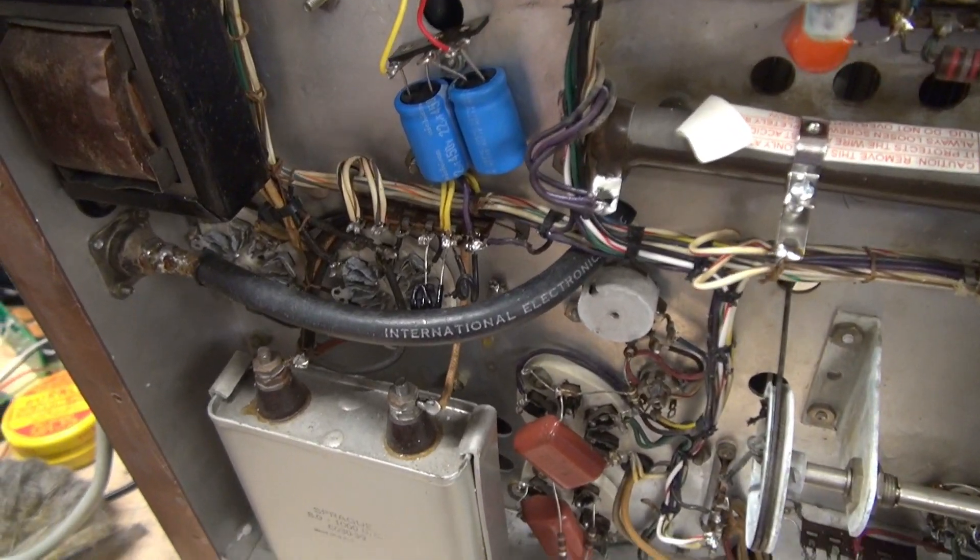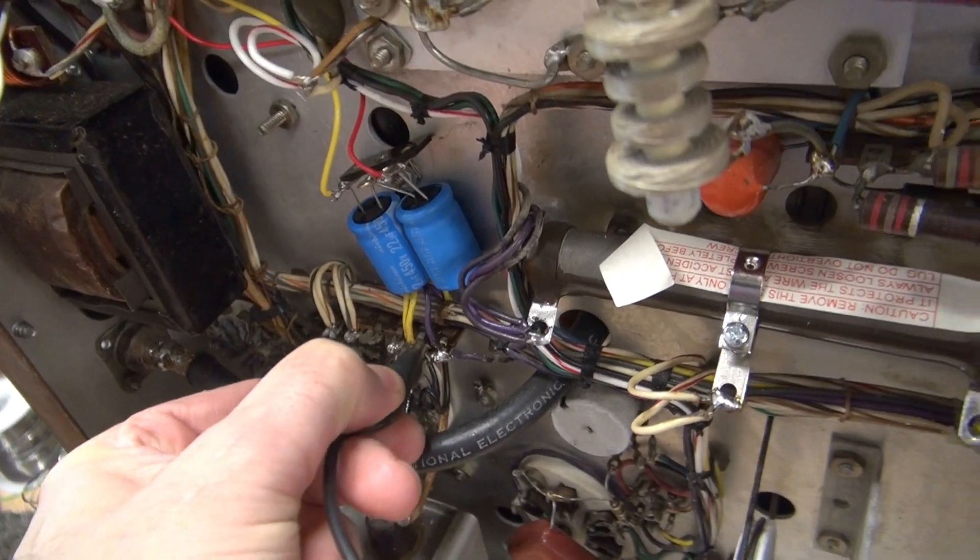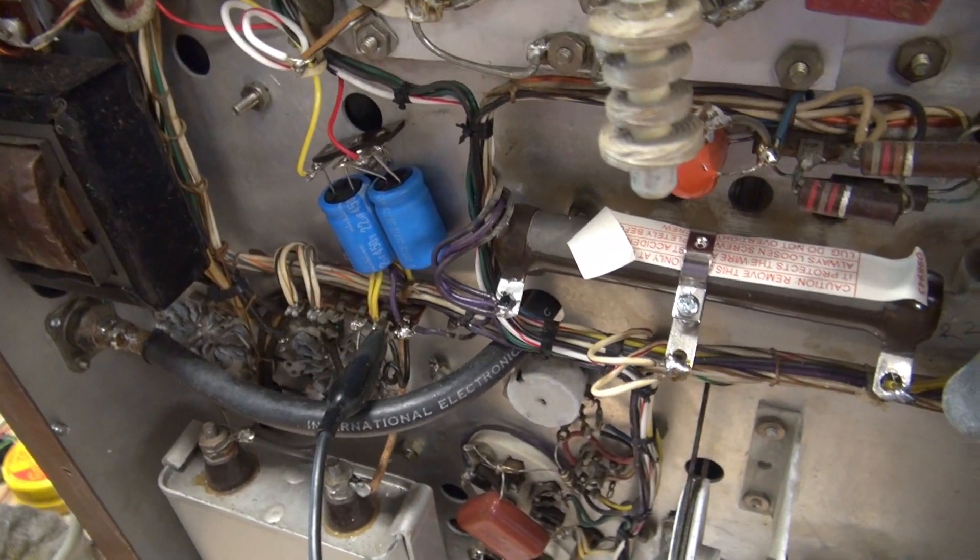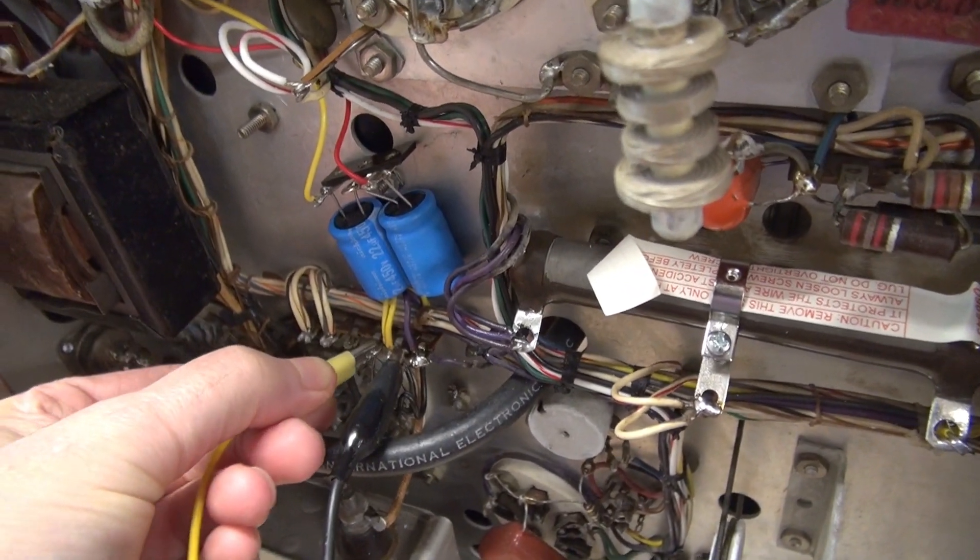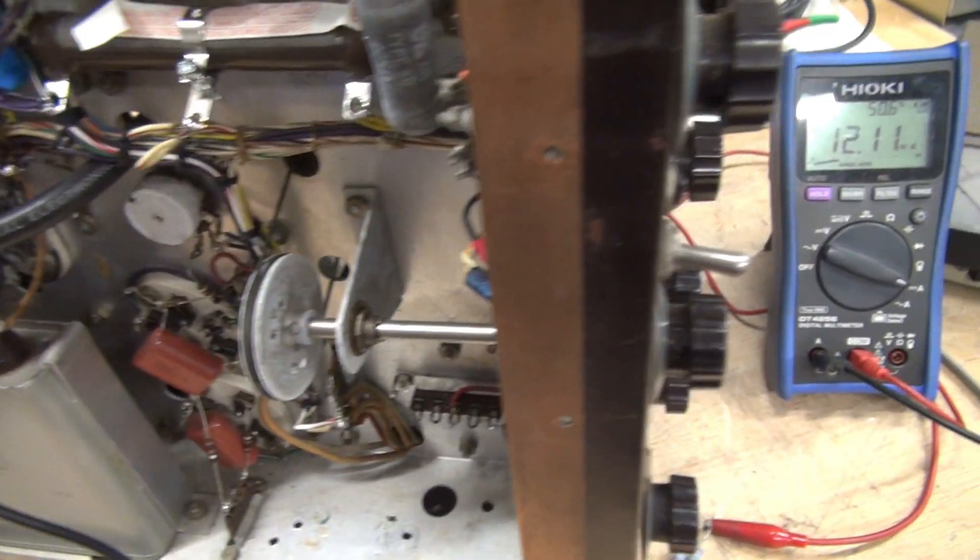We're going to start with the plate meter. So these are my test leads that are hooked to my power supply and current meter that we're going to compare against the Viking 2.